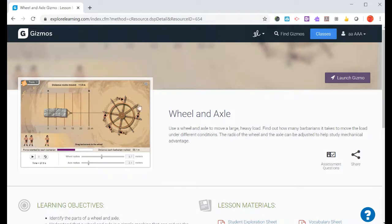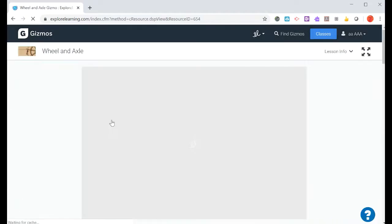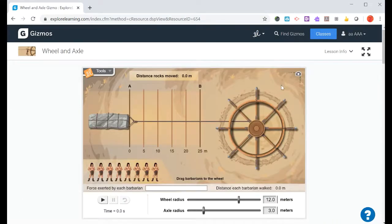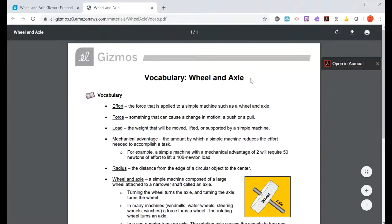Here is the wheel and axle gizmo. Click on this and what we always suggest is that when you go to the info up here, that you click on the vocabulary sheet so you see the vocab that will be used.